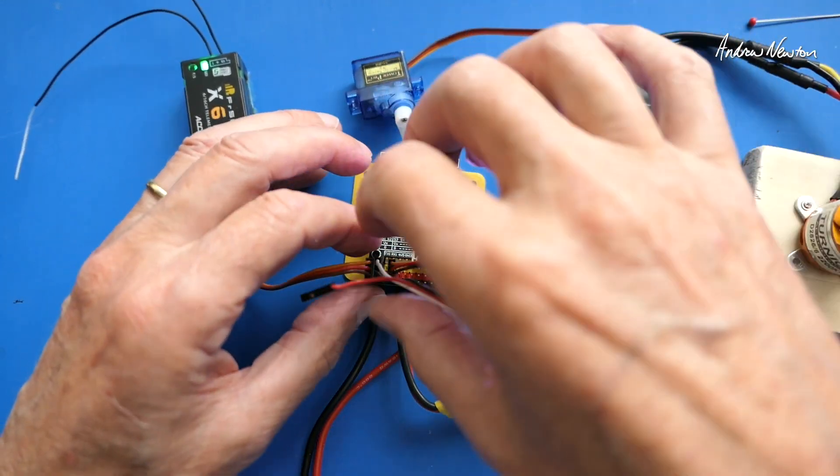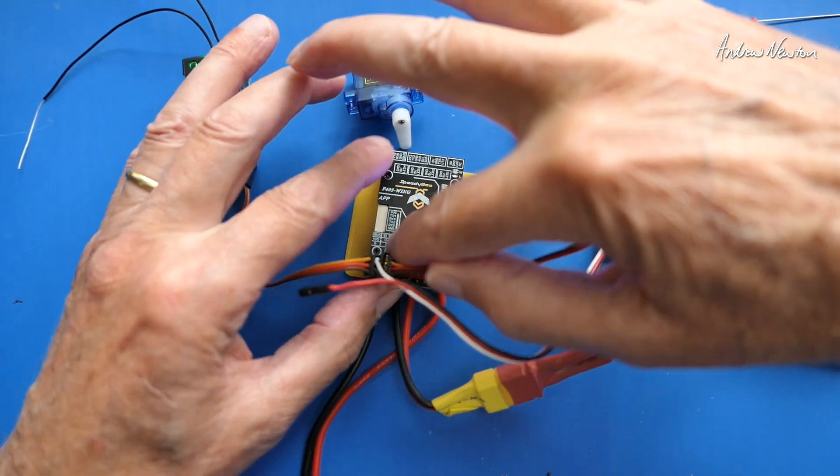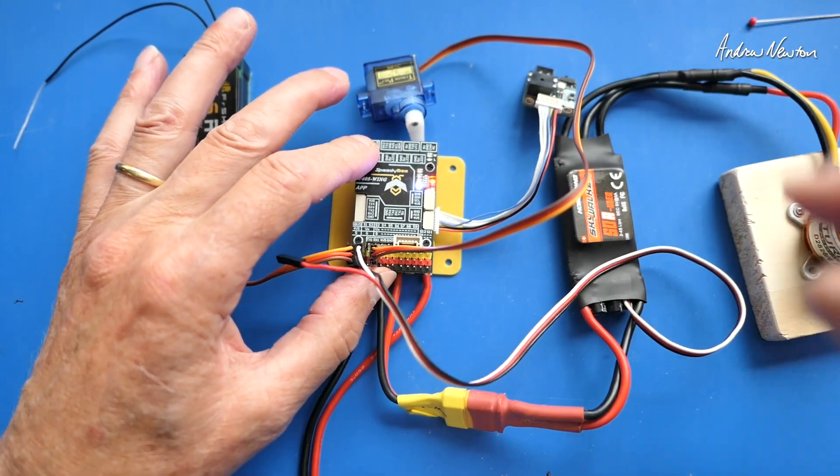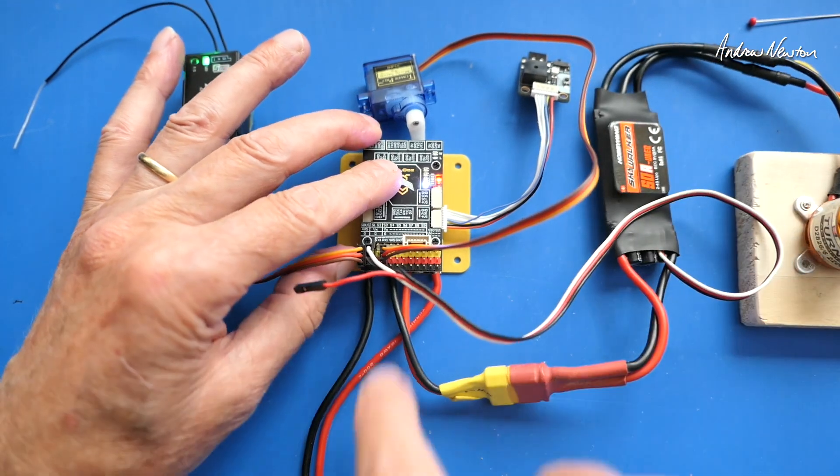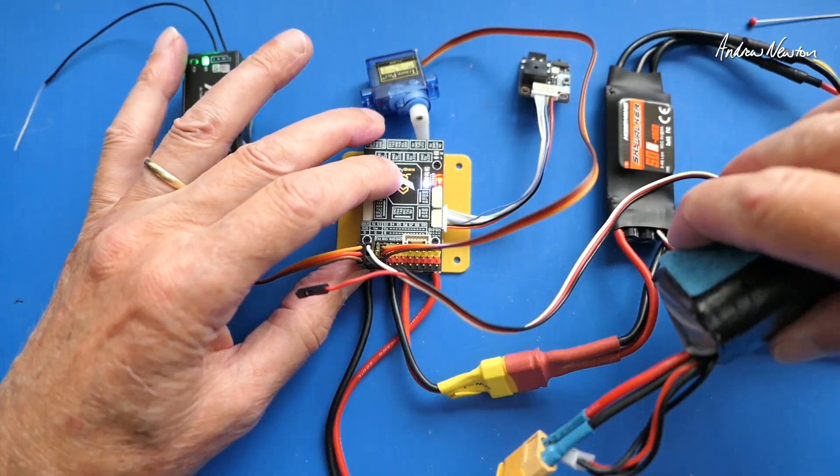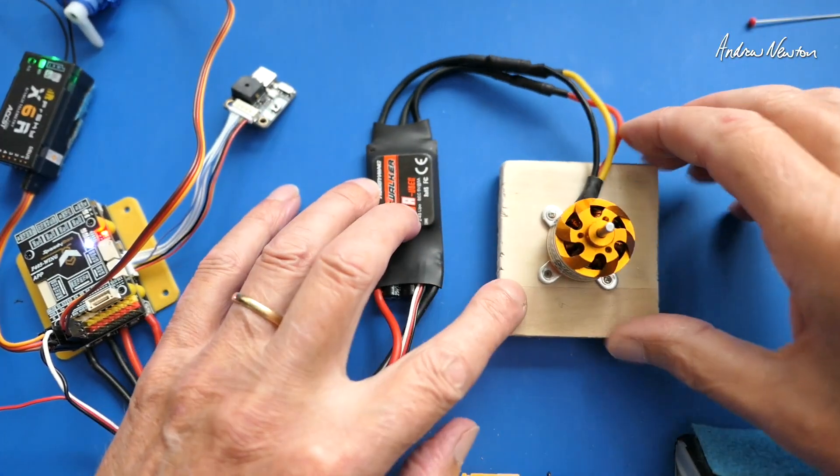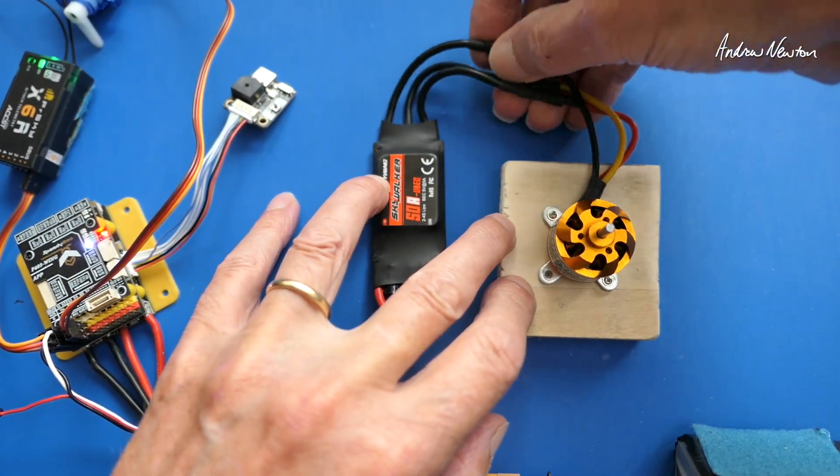The speed controller is getting its signal from S1 and S2 to regulate the speed of the motor. The power to the speed controller comes out of the ESC pads. Battery power goes into the battery cables and the ESC is connected to the motor via these three phase wires.